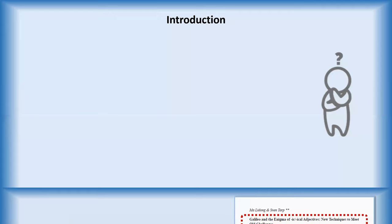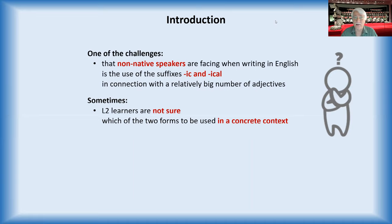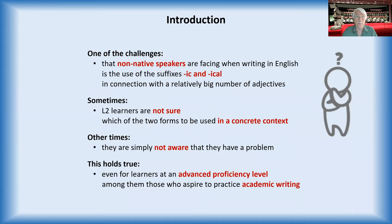One of the challenges that non-native learners and speakers of English are facing when writing this language is the use of adjectives ending in -ic and -ical. There are quite a lot of adjectives ending in those suffixes. Sometimes users are not sure which one they should use in a specific context, and other times they're not aware that they have a problem. And it's not only a question for learners at beginners and intermediate level, but also for advanced learners and even those practicing academic writing.